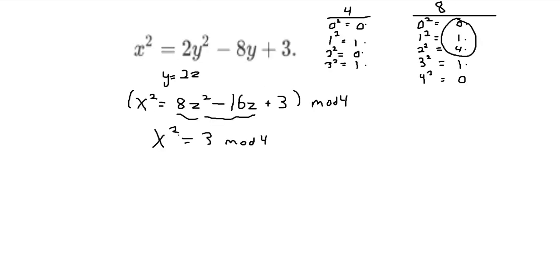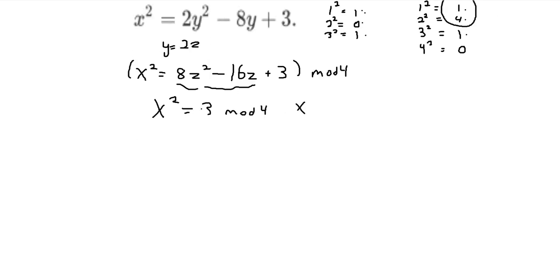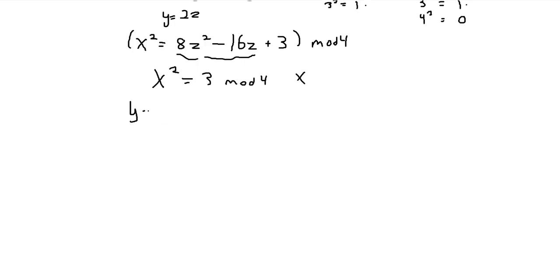But this is a contradiction, because a number squared can only be 0 or 1 mod 4. So this implies that y has to be odd.